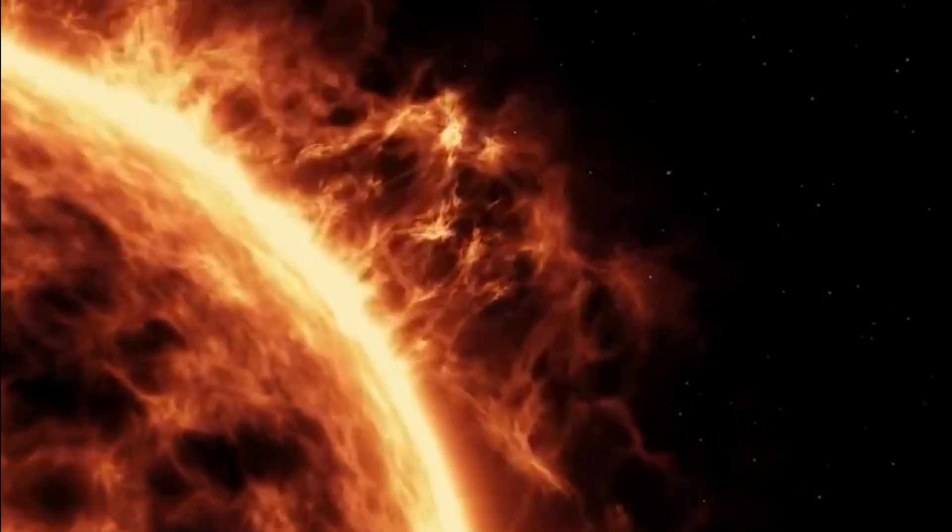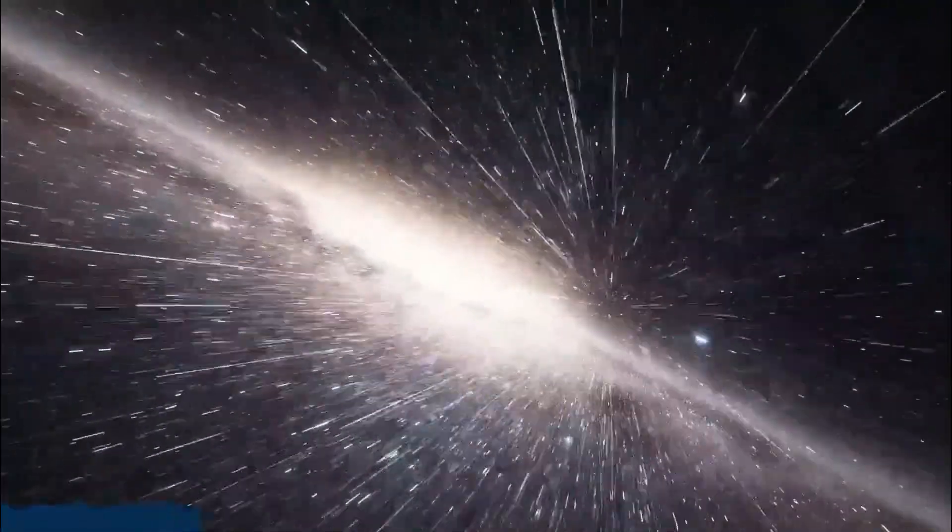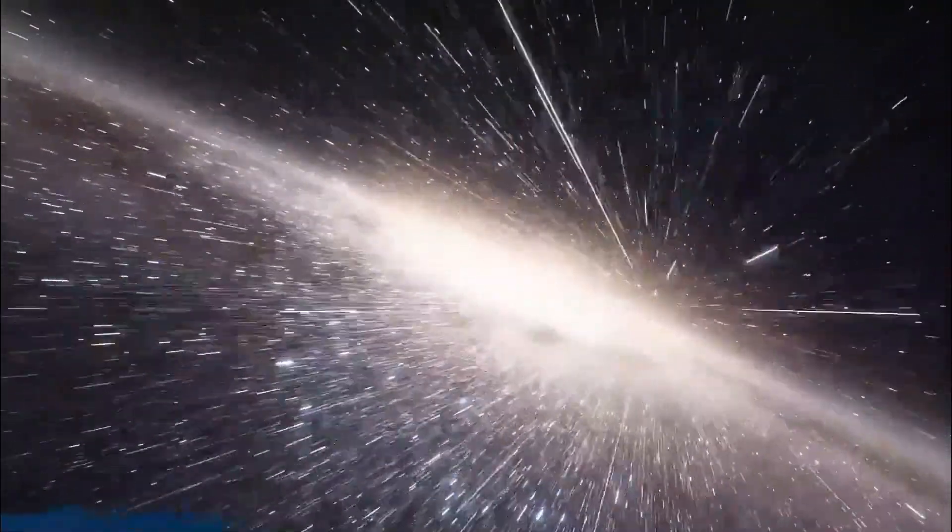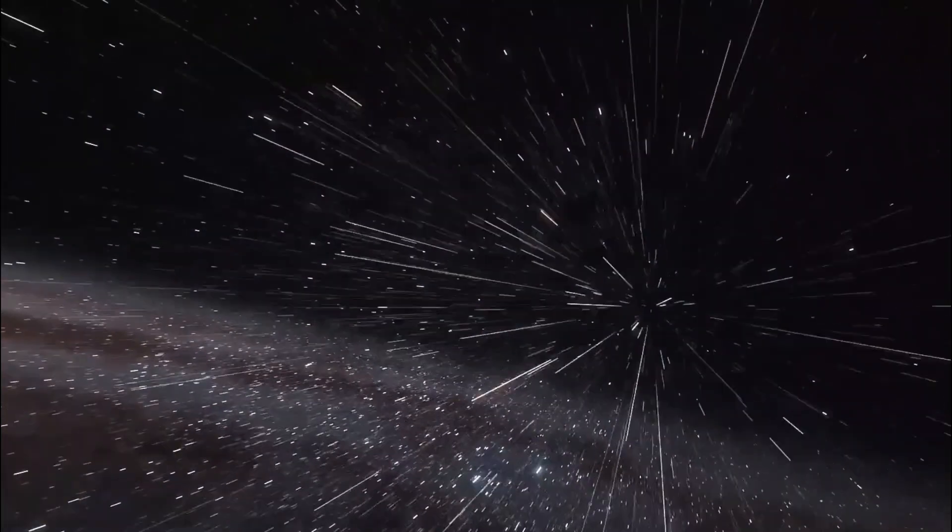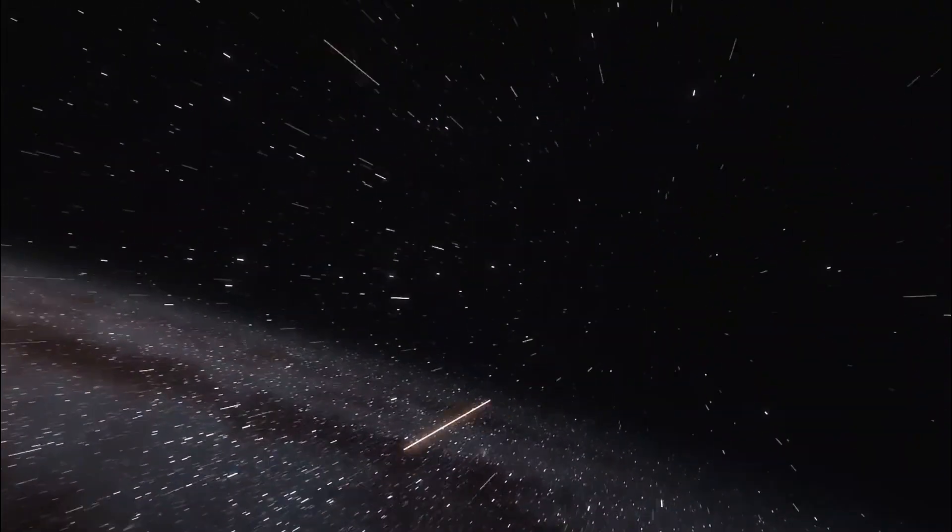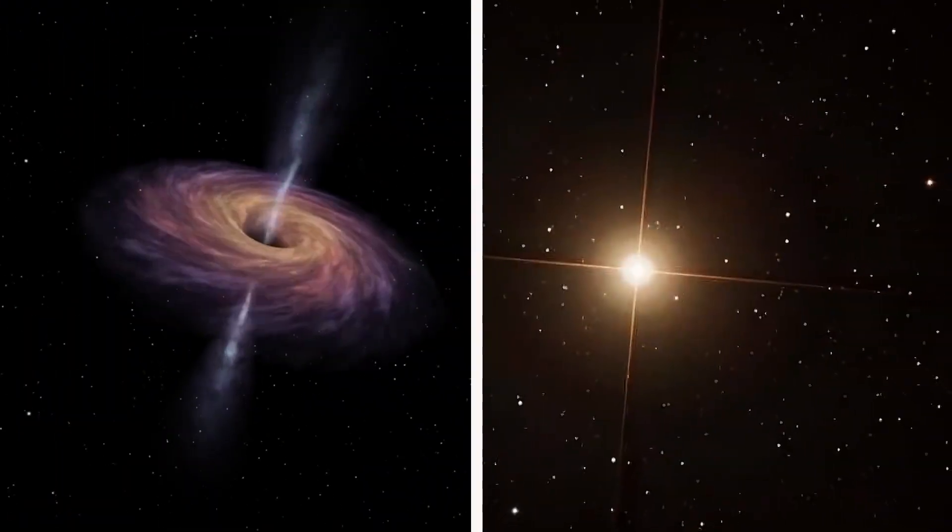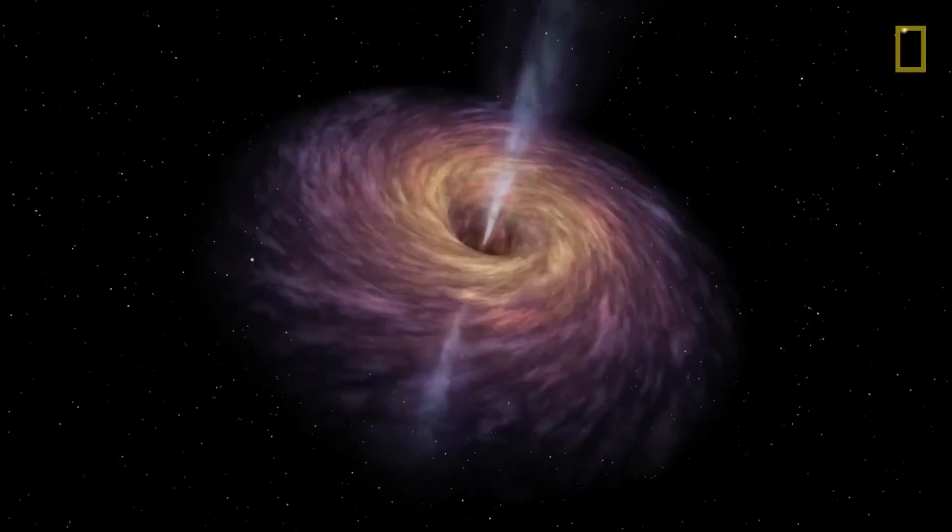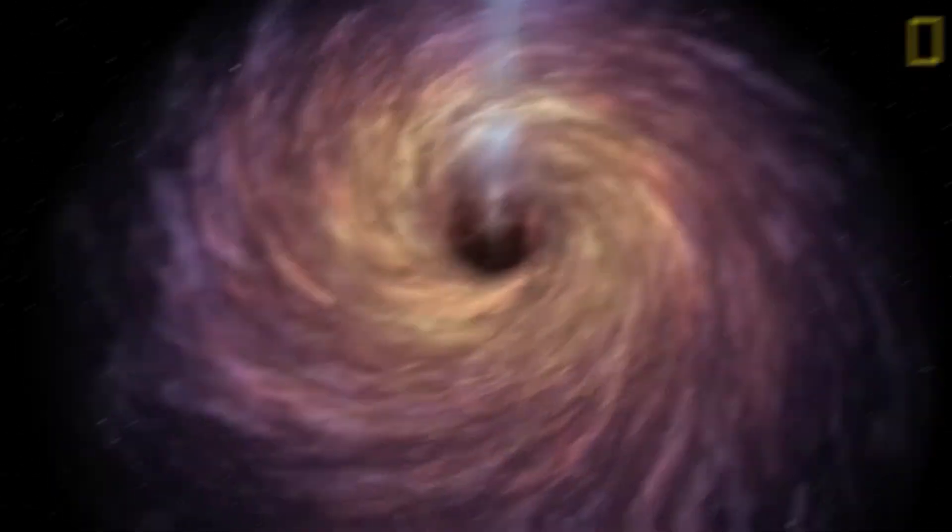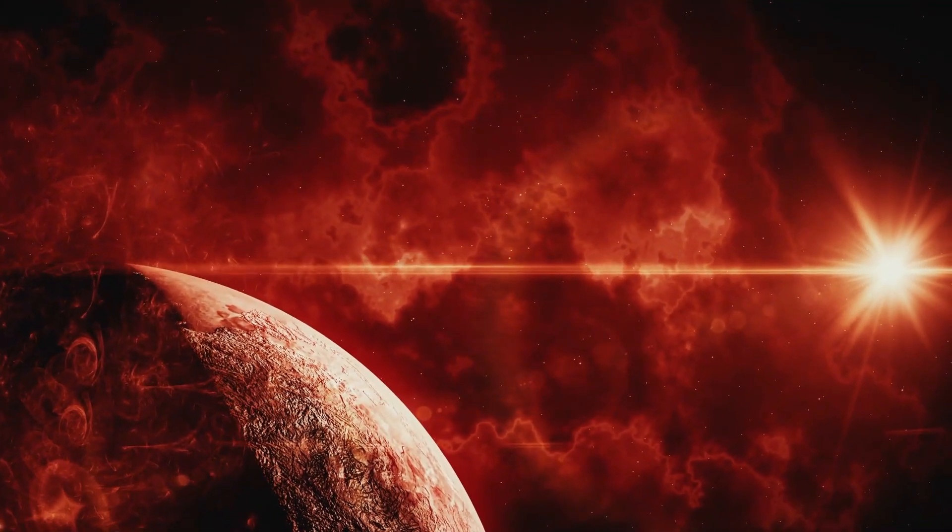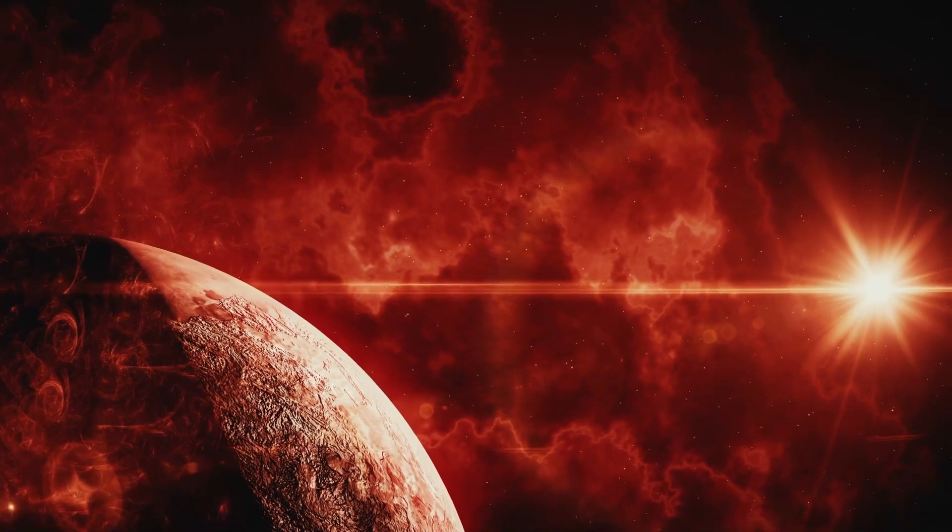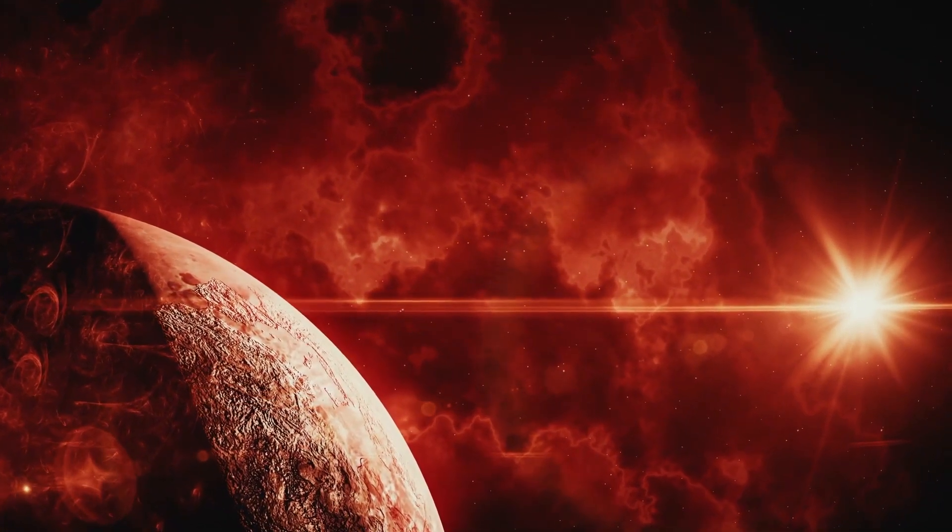In 2019, Betelgeuse experienced a strange event. The star suddenly dimmed quite significantly, and astronomers were baffled by what could cause it. Some astronomers speculated that the dimming was a sign that Betelgeuse was about to go supernova. However, other astronomers believed that the dimming was caused by something else, such as a dust cloud or a surface mass ejection.